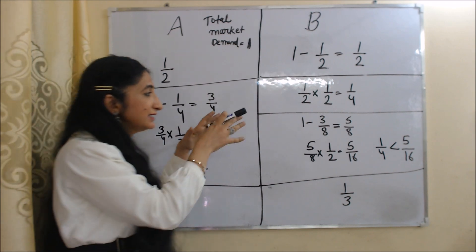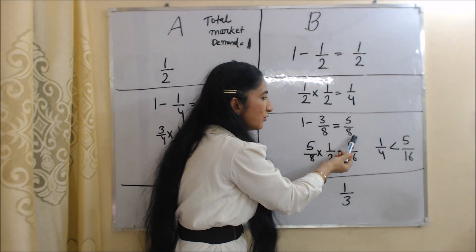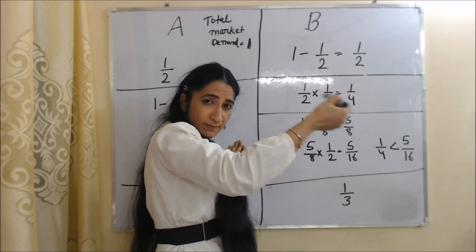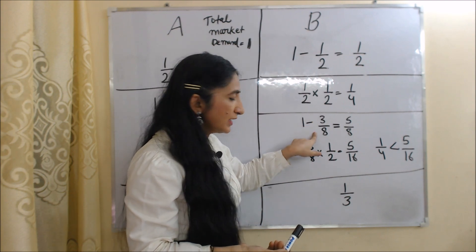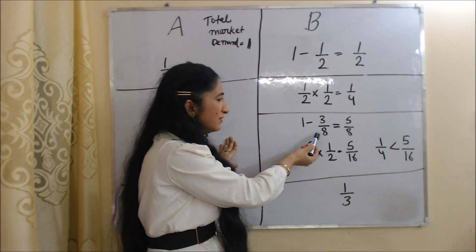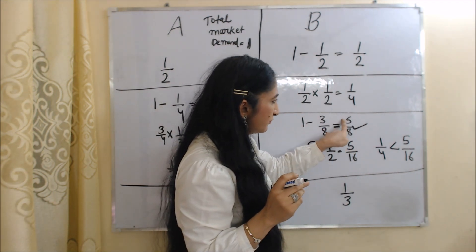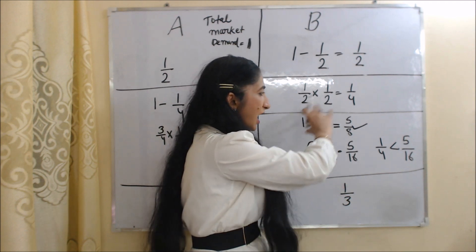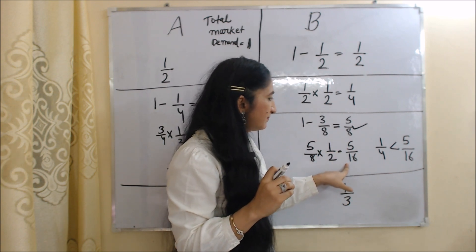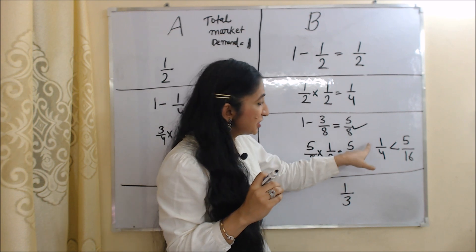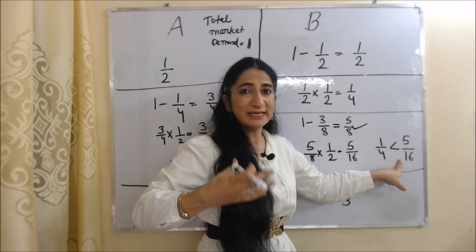Seeing increased profit, B decides to increase production. Now available market demand is 1 minus 3/8, which equals 5/8. B will produce half of 5/8, which equals 5/16. So B will produce 5/16. Initially B was producing 1/4, and now B is producing 5/16 — production of B has increased.